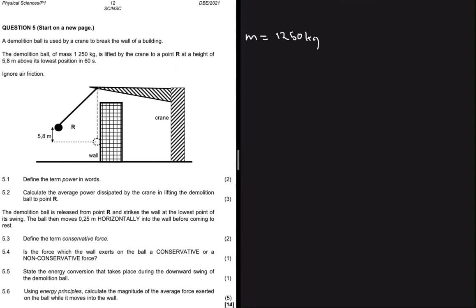Mass of 1250 kg. It's lifted by the crane to a point R at a height of 5.8 meters above its lowest position in 60 seconds, so we have some time t of 60 seconds. Ignore air friction.